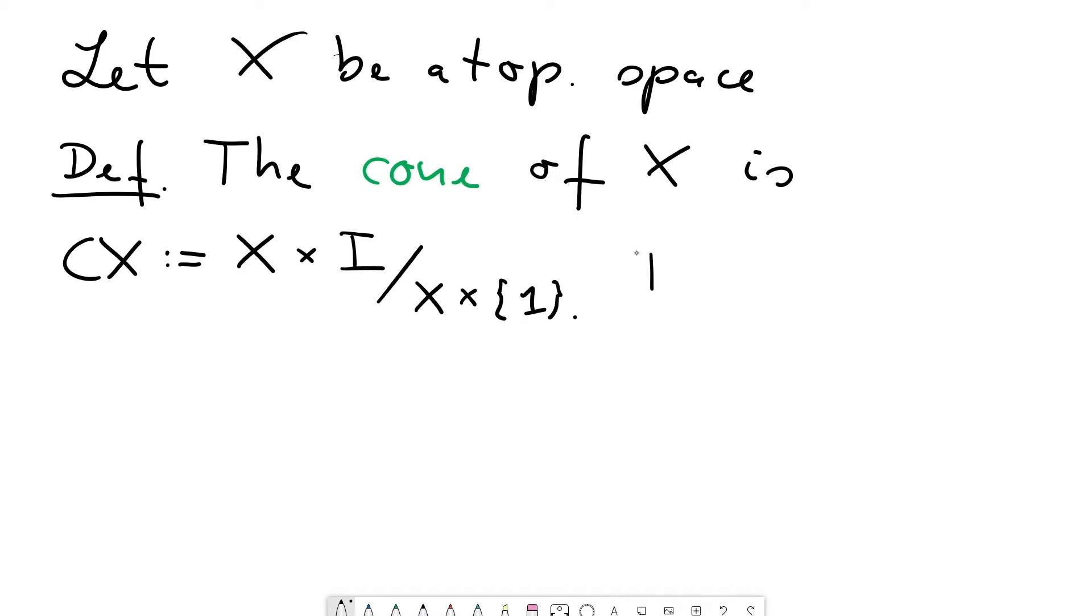And the second space is the suspension. The suspension of X is the space, let's call it S as in suspension. And well, it's just you take the cone and you also collapse the other copy of X at the bottom of the cylinder.